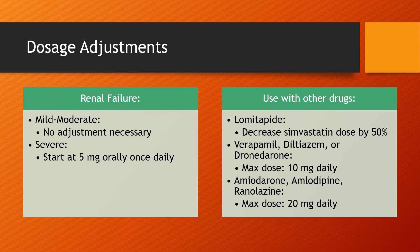Dosage adjustments: for renal failure or renal impairment, mild to moderate impairment requires no adjustment. For severe impairment, however, we need to start patients at 5 mg orally once daily. There are also adjustments for use of Simvastatin with other drugs — like Lomitapide, where we decrease the Simvastatin dose by 50%. When using Simvastatin with verapamil, diltiazem, or dronedarone, our max dose should be 10 mg daily. While using Simvastatin with amiodarone, amlodipine, or ranolazine, our max dose should be 20 mg daily.